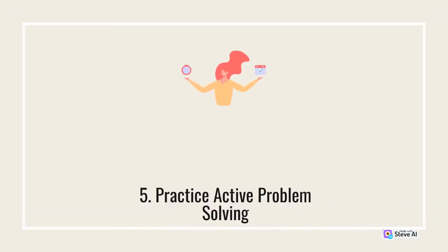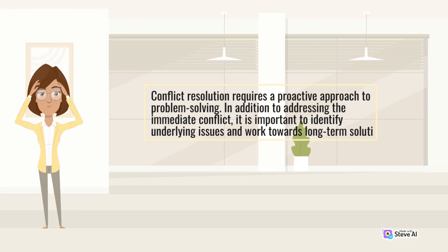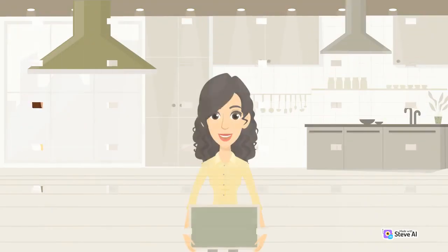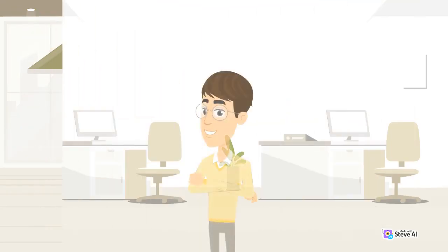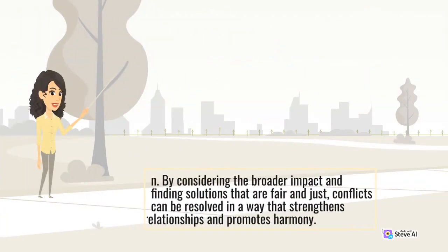5. Practice Active Problem Solving. Conflict resolution requires a proactive approach to problem-solving. In addition to addressing the immediate conflict, it is important to identify underlying issues and work towards long-term solutions. One effective problem-solving technique is to use the win-win-win approach. This method involves finding a solution that benefits all parties involved, as well as the wider community or organisation. By considering the broader impact and finding solutions that are fair and just, conflicts can be resolved in a way that strengthens relationships and promotes harmony.